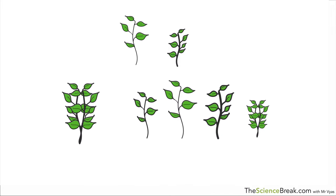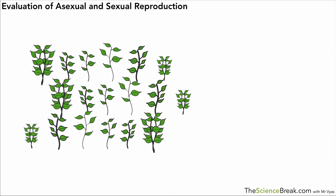So we've got a whole bunch of different plants — some are thin, some have thicker stems, some have more branches, more leaves, that kind of thing — and we could see that we would end up with a population of individuals that show variation.